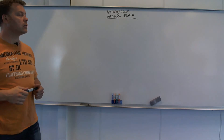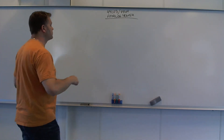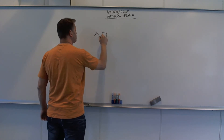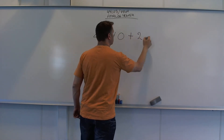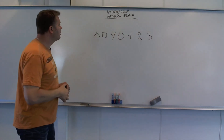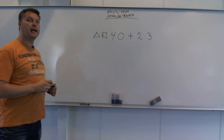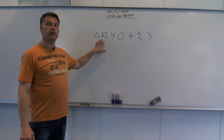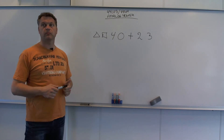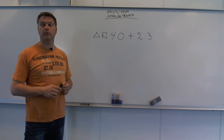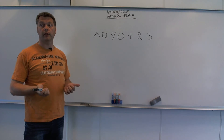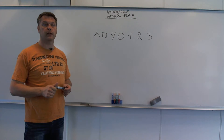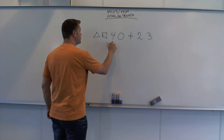Vi skal snakke lidt om talsystemet. Hvad er det, vi ser heroppe? Hvad kalder man det, vi ser heroppe og på tavlen heroppe? Vi kan tage et fællesord for dem. Symboler, ja. Det kunne det faktisk godt være. Tegn eller symboler, det er rigtigt. Det er ikke ret meget andet end symboler.